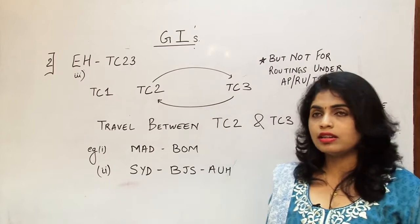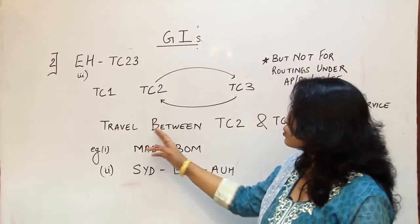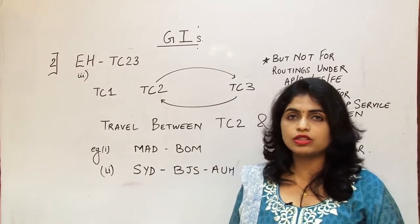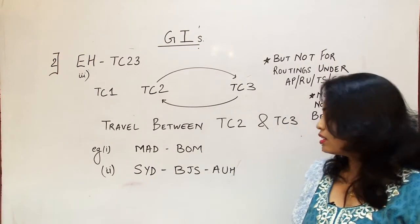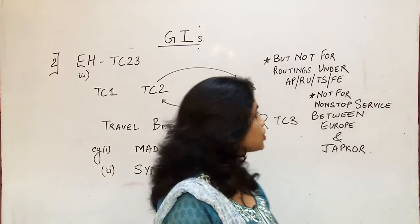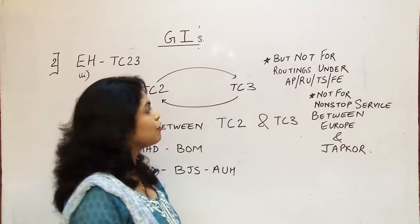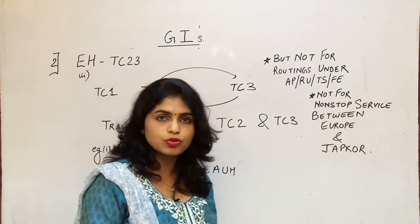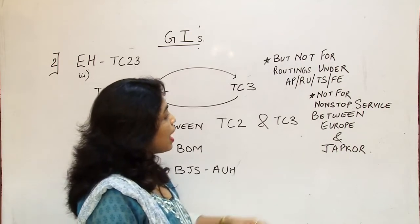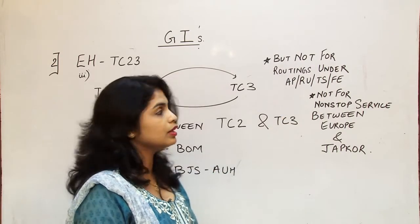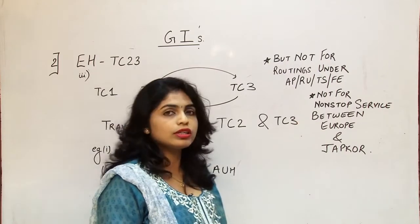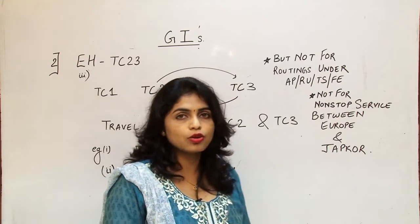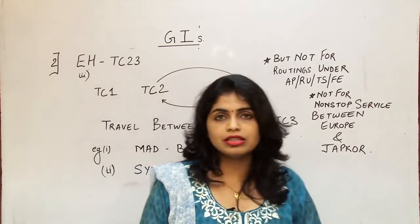Now we have EH again coming in one more case wherein the travel is between TC2 and TC3. If the flight is going between TC2 countries and TC3 countries, it may also be Eastern Hemisphere, but there are certain conditions. When is it EH? It is not there for routings which may fall under the routings or under the conditions of AP, RU, TS, FE, which are the global indicators we are going to study later. There is one more condition which is not applicable if there is a non-stop service between the countries falling under Europe traffic conference and JAPCOR countries. If these conditions are there, then it cannot be EH. Apart from that, it is definitely an EH.